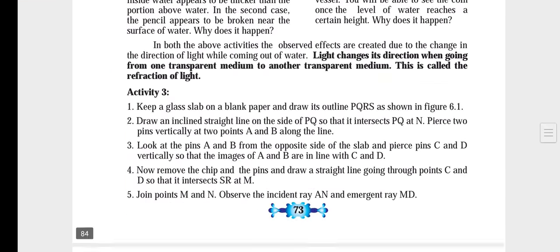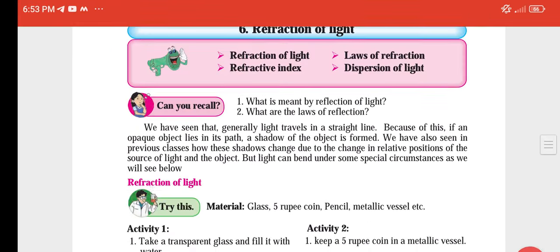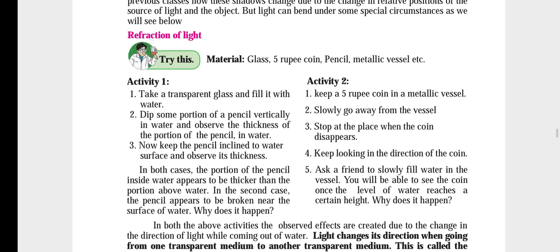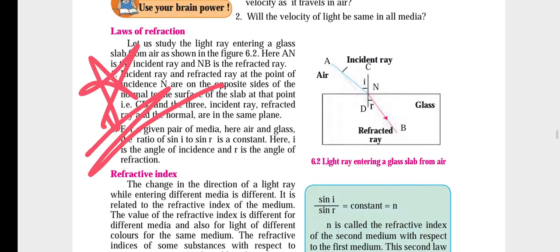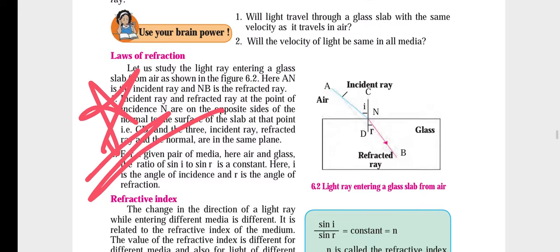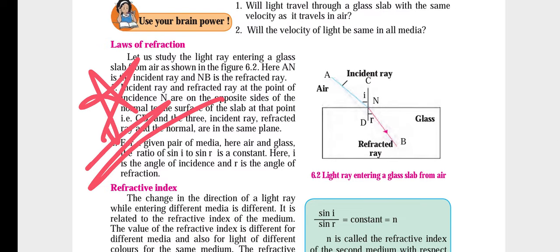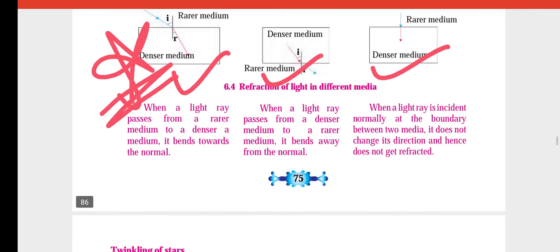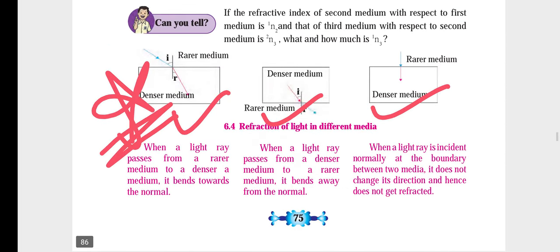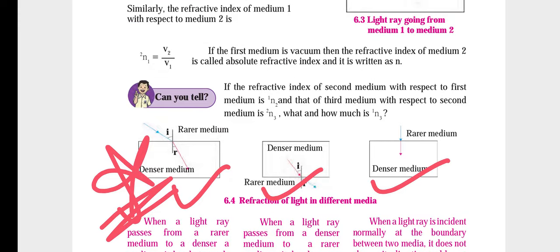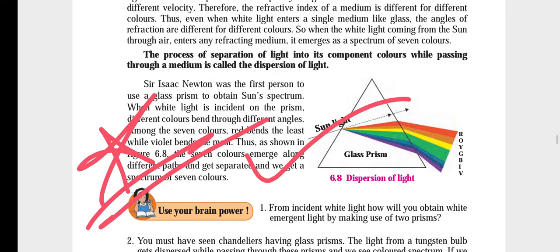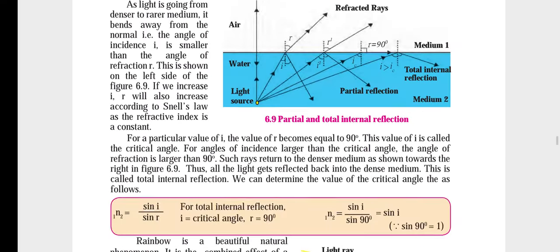When I move forward, we have chapter number 6, Refraction of Light. On page number 74 you will get laws of refraction — please mark it, it is important. Then on page number 75, question number 3, laws of refraction — that is to be starred. Moving further ahead on page number 77, we have a prism question that again has to be starred.